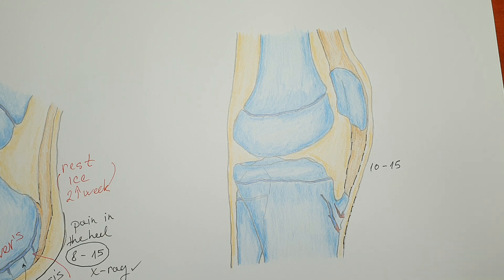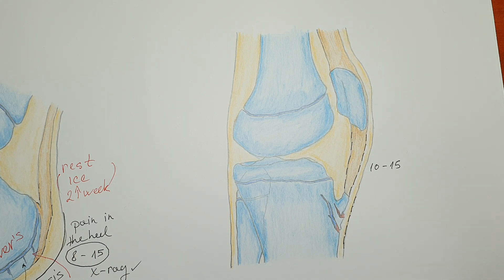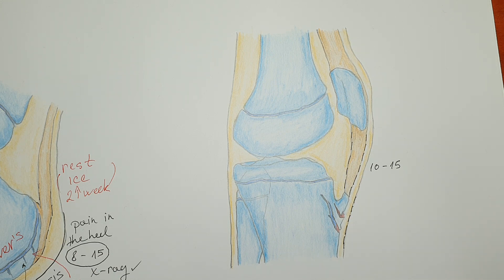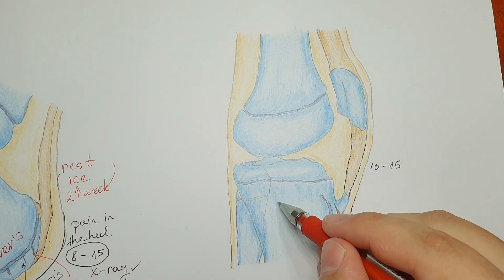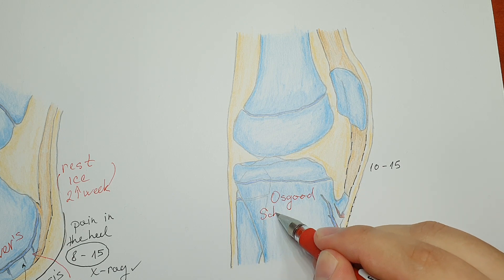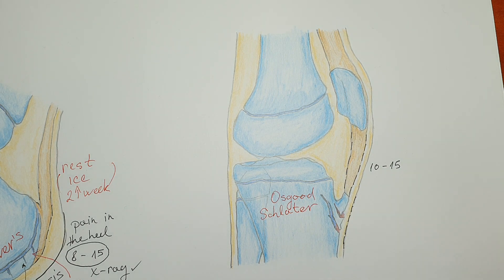Like Sever's disease, Osgood-Schlatter's is treated with rest and ice, and like Sever's disease, it is mostly a self-limiting condition. The inflammation of the apophysis at the tibial tuberosity — causing pain mostly in children during these years when they do a lot of running and jumping — is called Osgood-Schlatter's disease. Of course it sounds worse than it is; it is actually also a self-limiting condition.